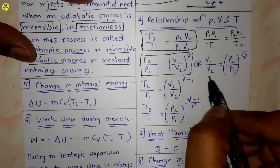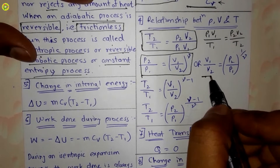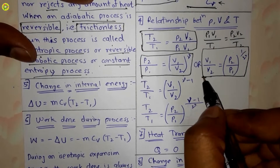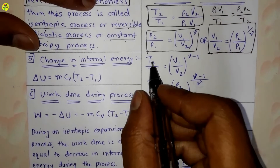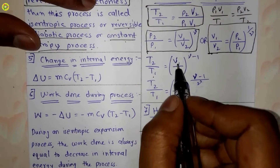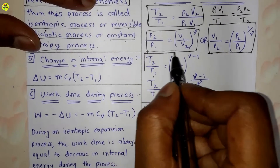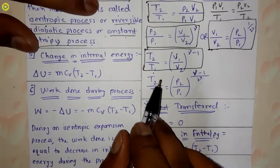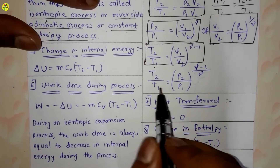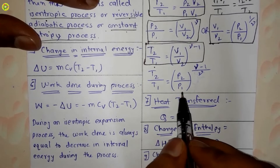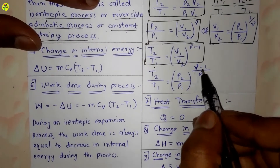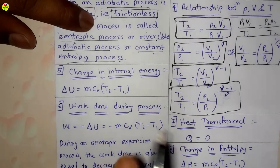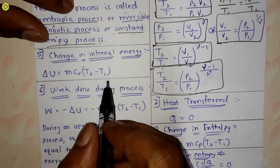We can also write V1 upon V2 is equal to P2 upon P1 raised to 1 upon gamma. The third relation is T2 upon T1 is equal to V1 upon V2 raised to gamma minus 1. The fourth relation is T2 upon T1 is equal to P2 upon P1 raised to gamma minus 1 upon gamma.